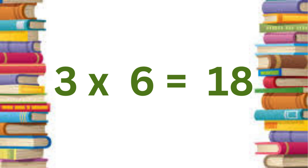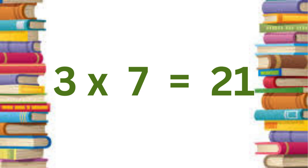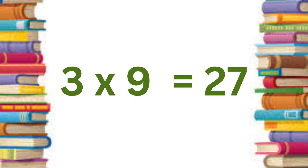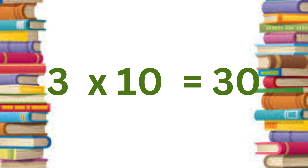Three sixes are eighteen. Three sevens are twenty-one. Three eights are twenty-four. Three nines are twenty-seven. Three tens are thirty.